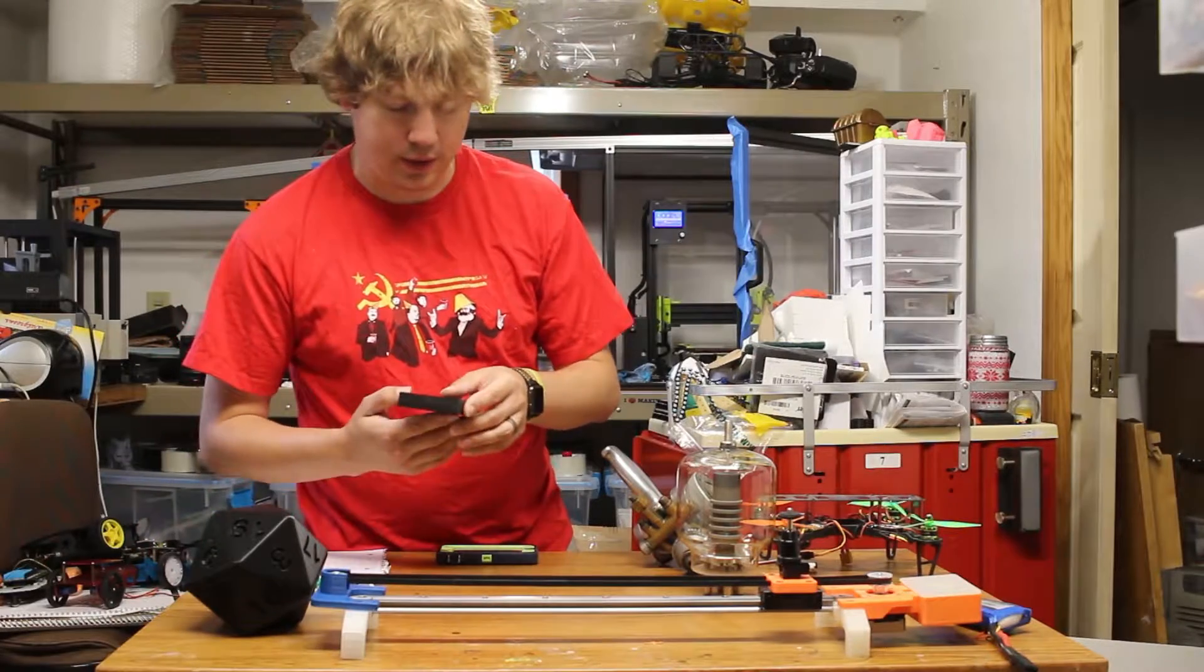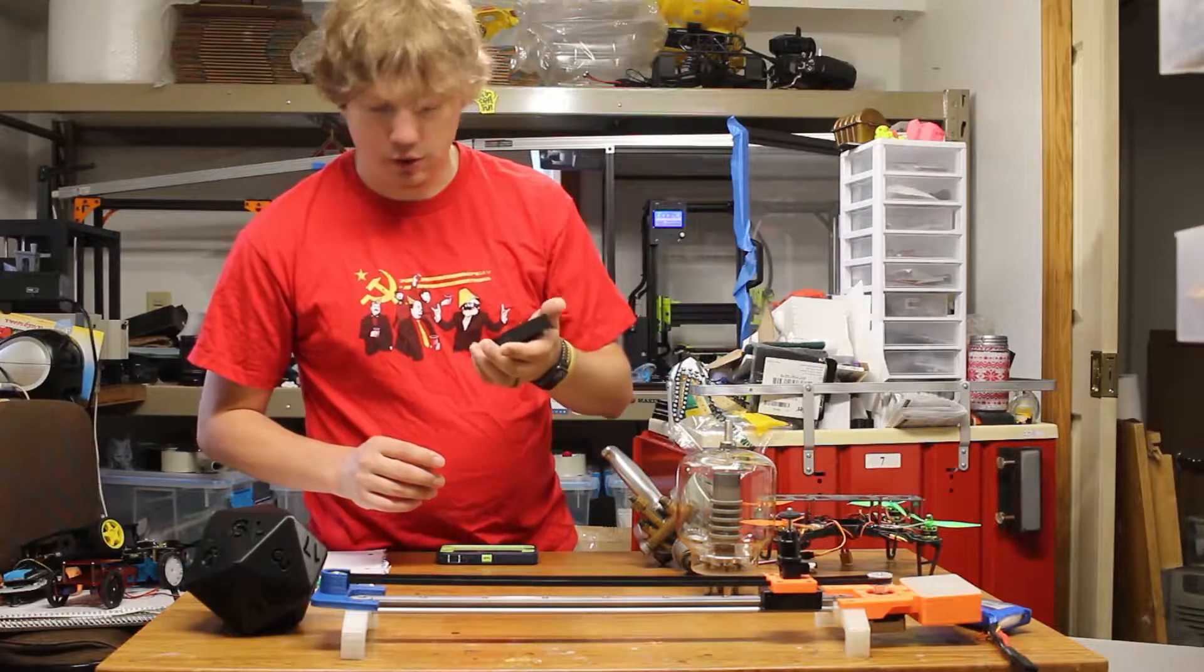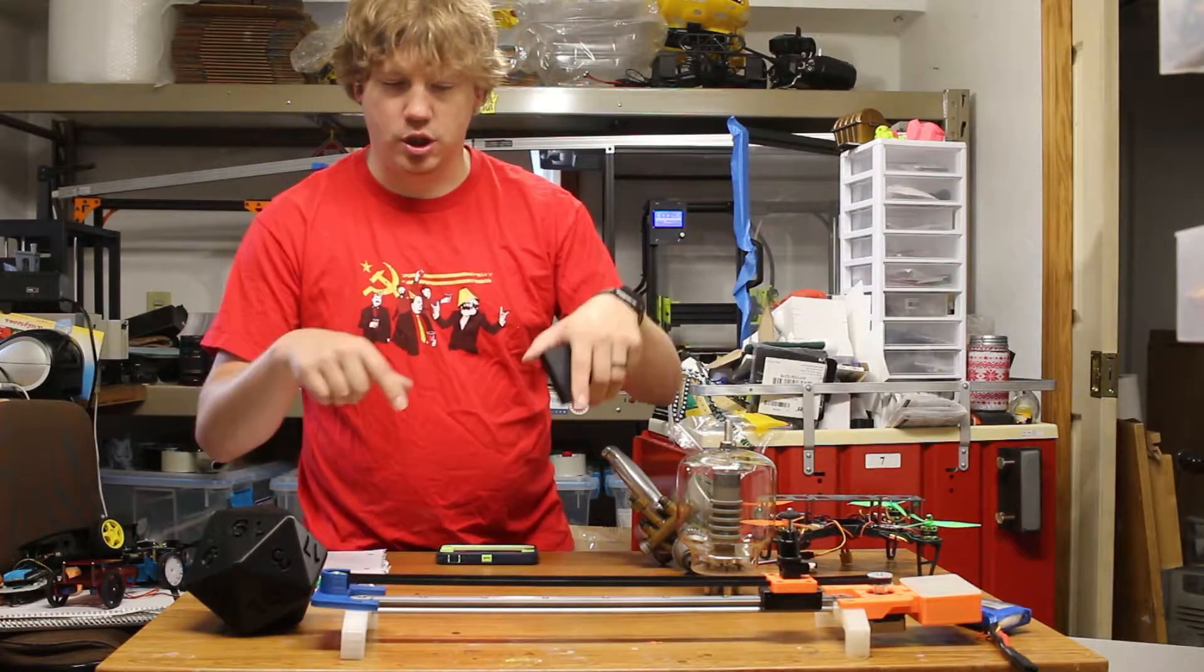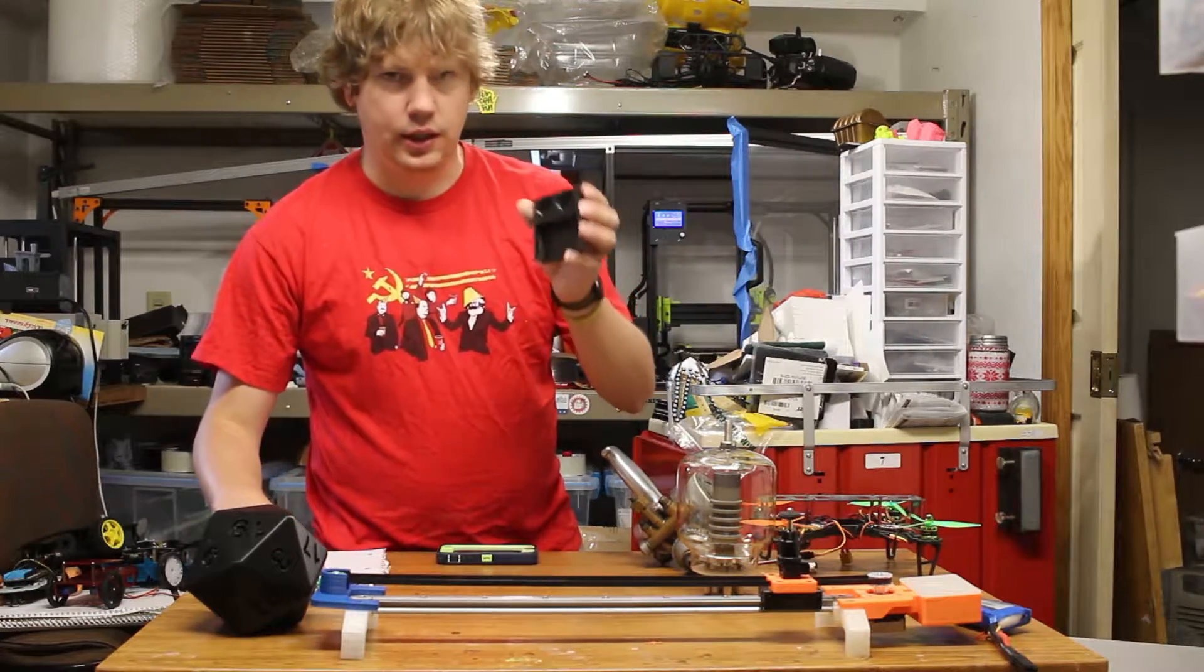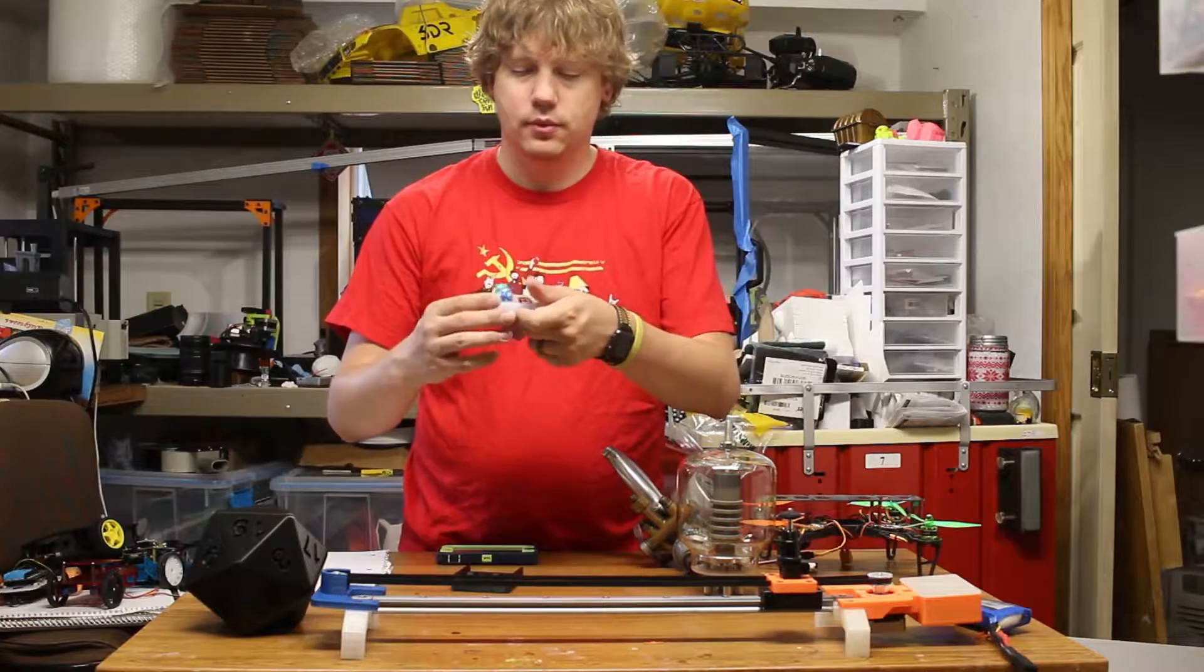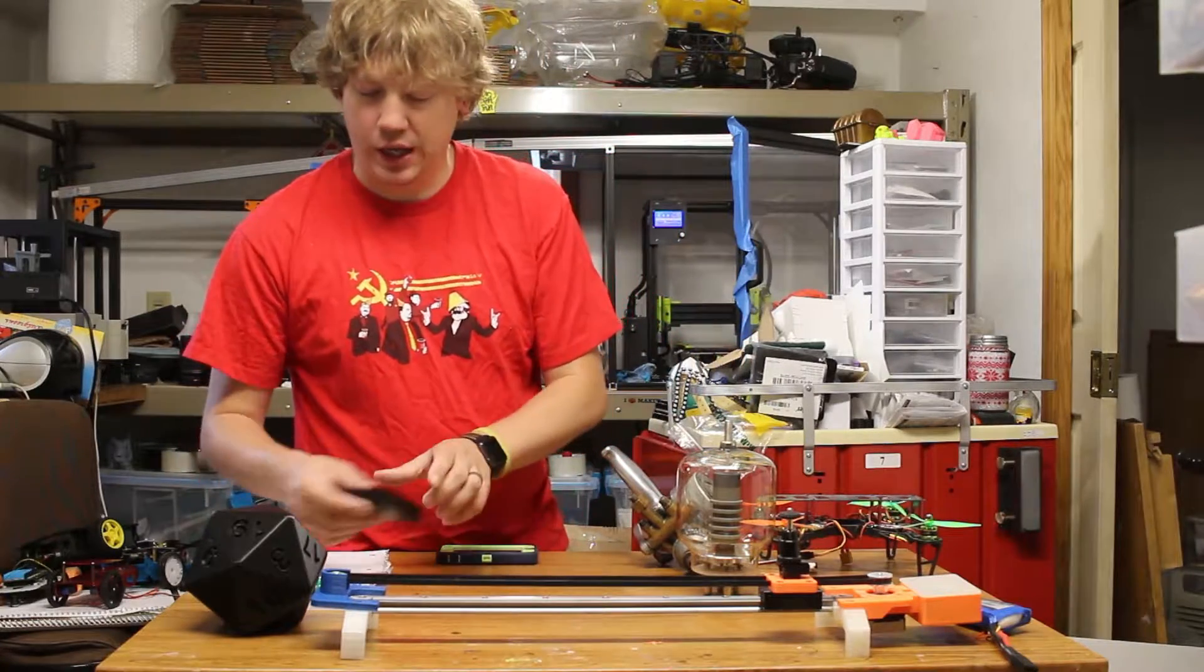Another thing I found on Thingiverse was this design here by a user. I didn't write his name down, but I'll have the link in the description. It's just a neat little thing to hold your dice when you go to play Magic. That printed pretty well on the Mini.